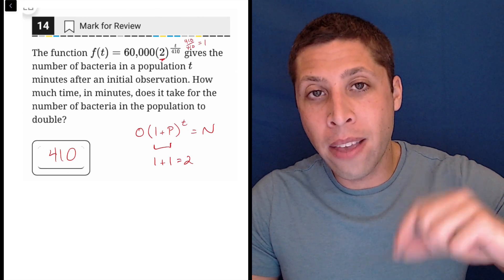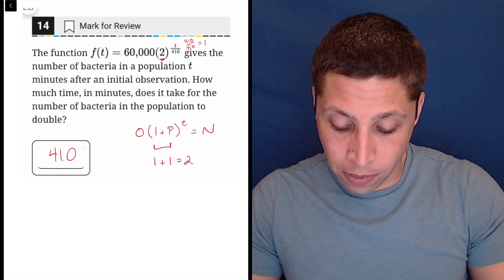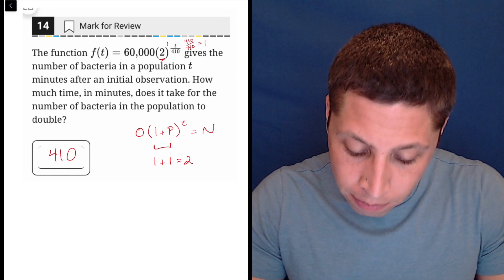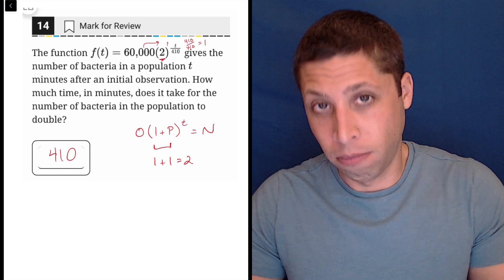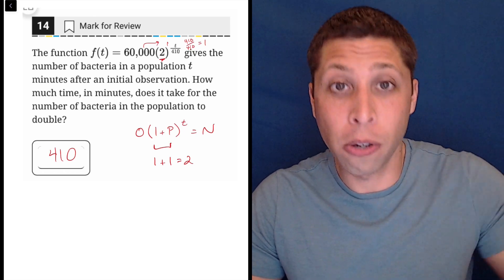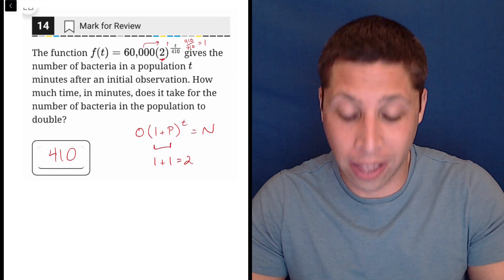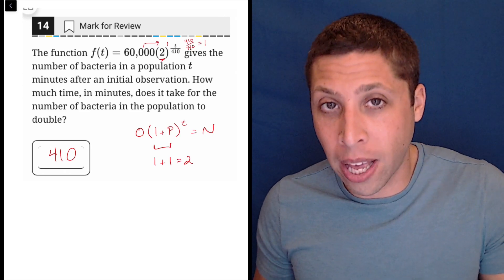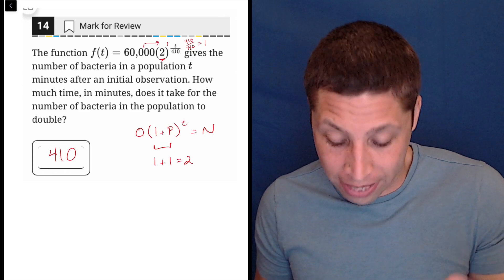So if the exponent were 1, then I would be multiplying 60,000 times 2 to the first, or 60,000 times 2, doubling it to 120,000.